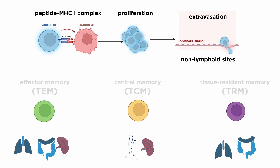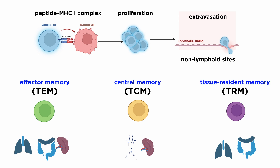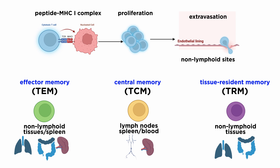The CTL memory compartment is composed of three cell types: effector memory, or TEM cells; central memory, or TCM cells; and tissue resident memory, or TRM cells. These subsets differ in their surface molecule expression and in their ability to exhibit effector functions. TCMs are found in the lymph nodes, spleen, and blood. TEMs are located in the non-lymphoid tissues and spleen, while TRMs are found in non-lymphoid tissues.